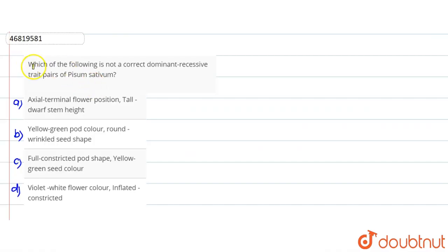In this question, which of the following is not a correct dominant-recessive trait pair of Pisum sativum, which is the garden pea plant? That is what Mendel selected for his experiments on inheritance.